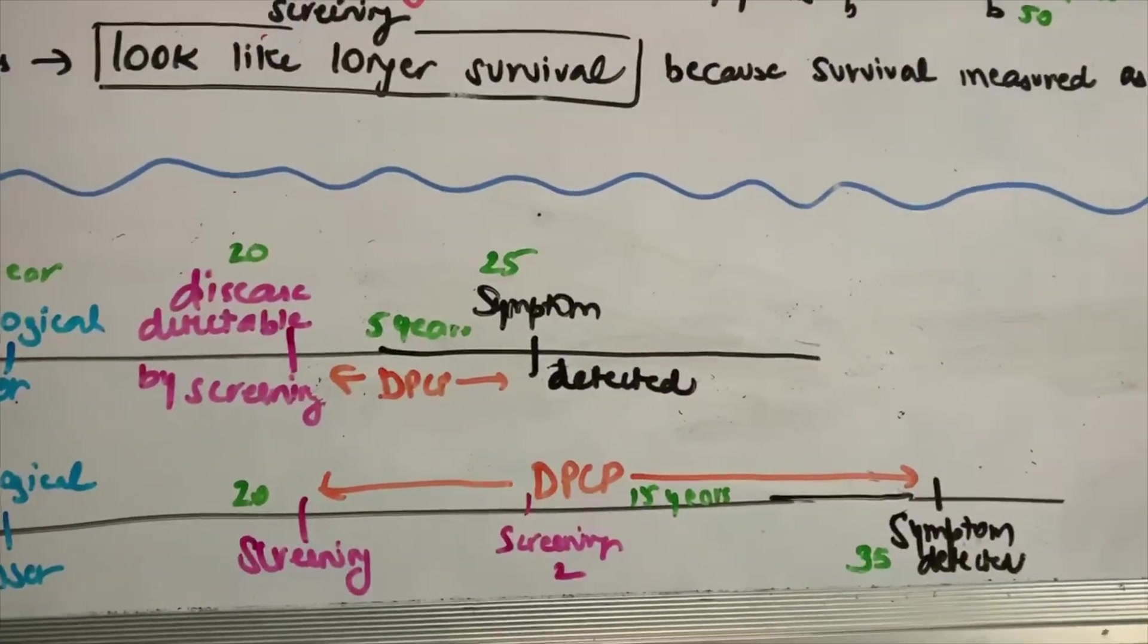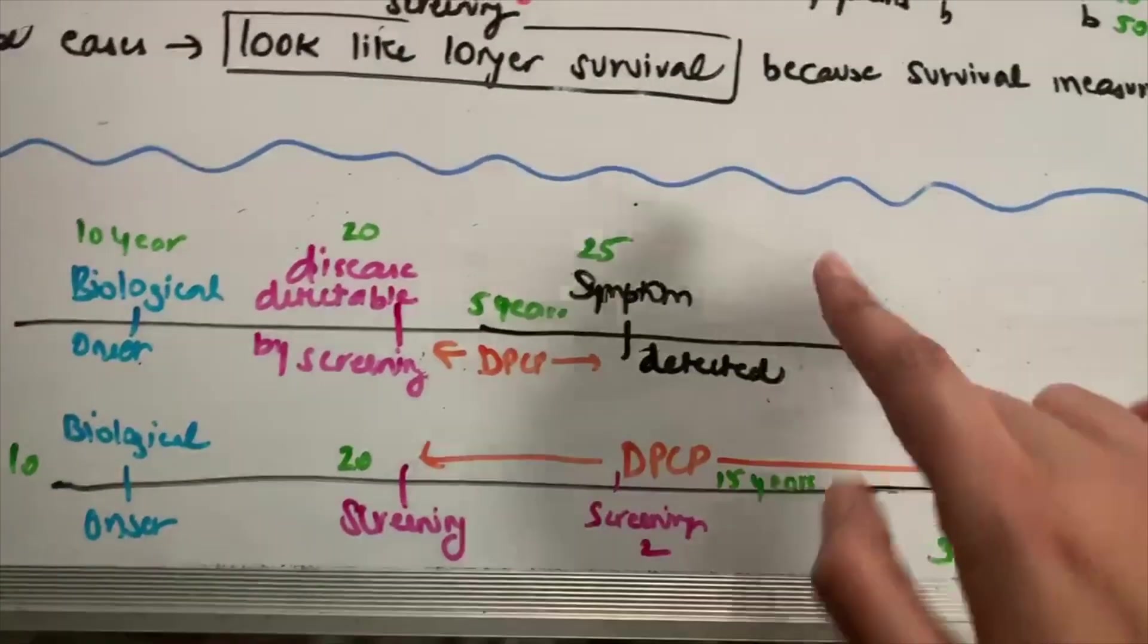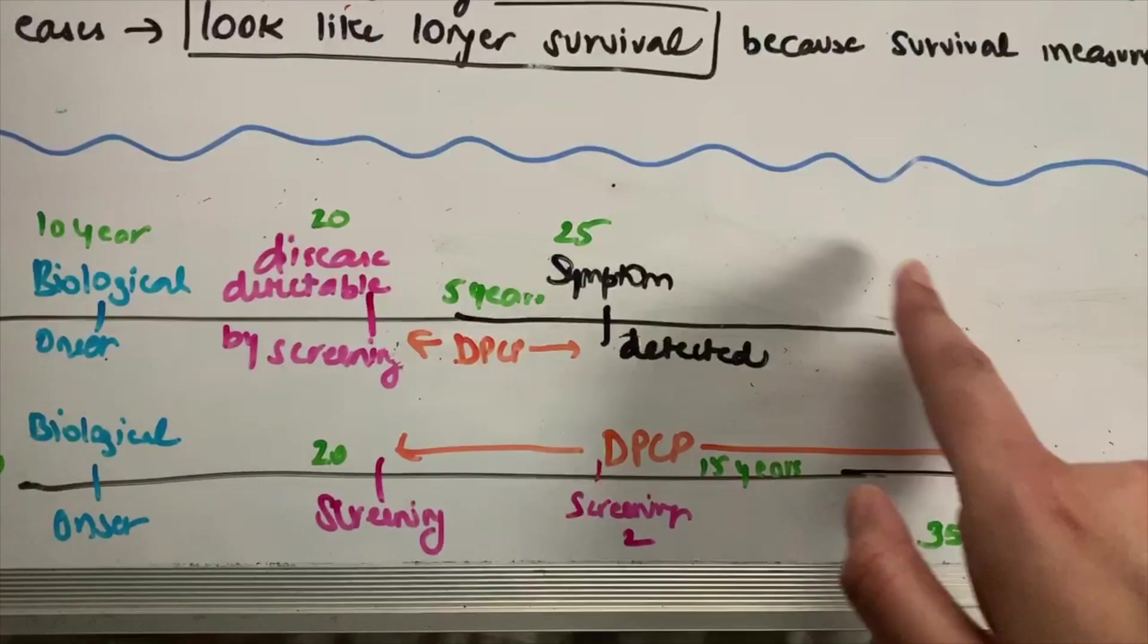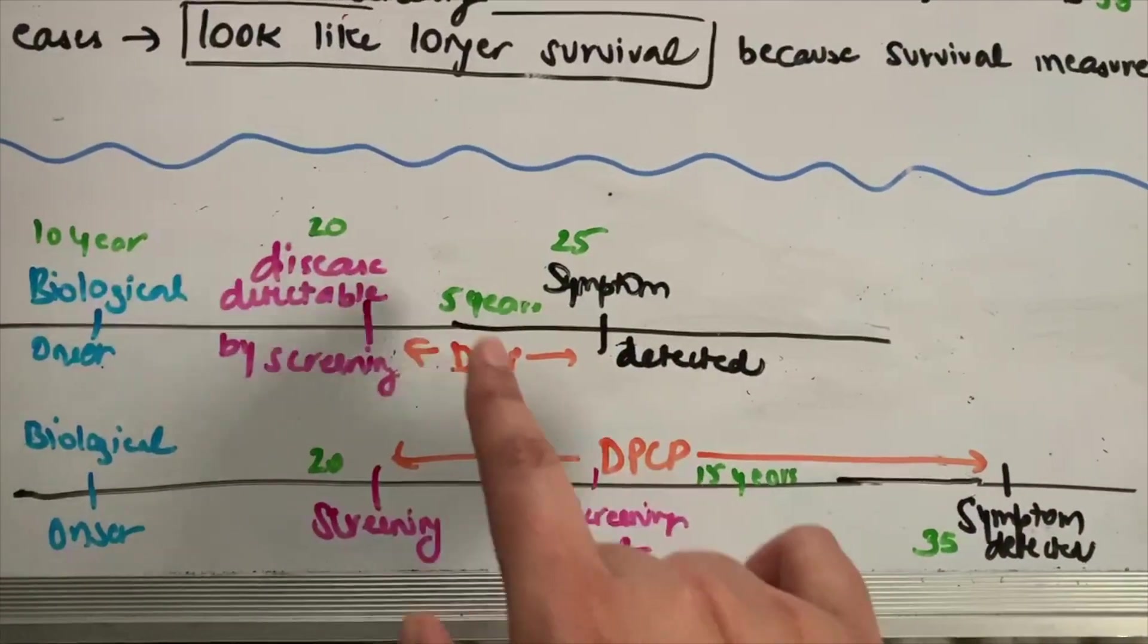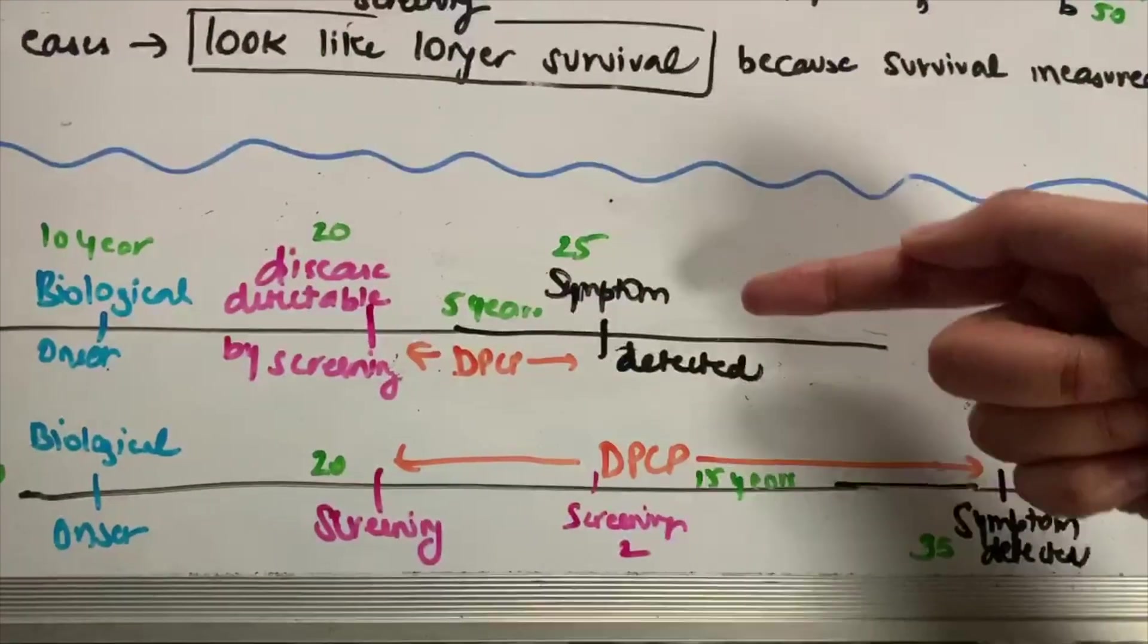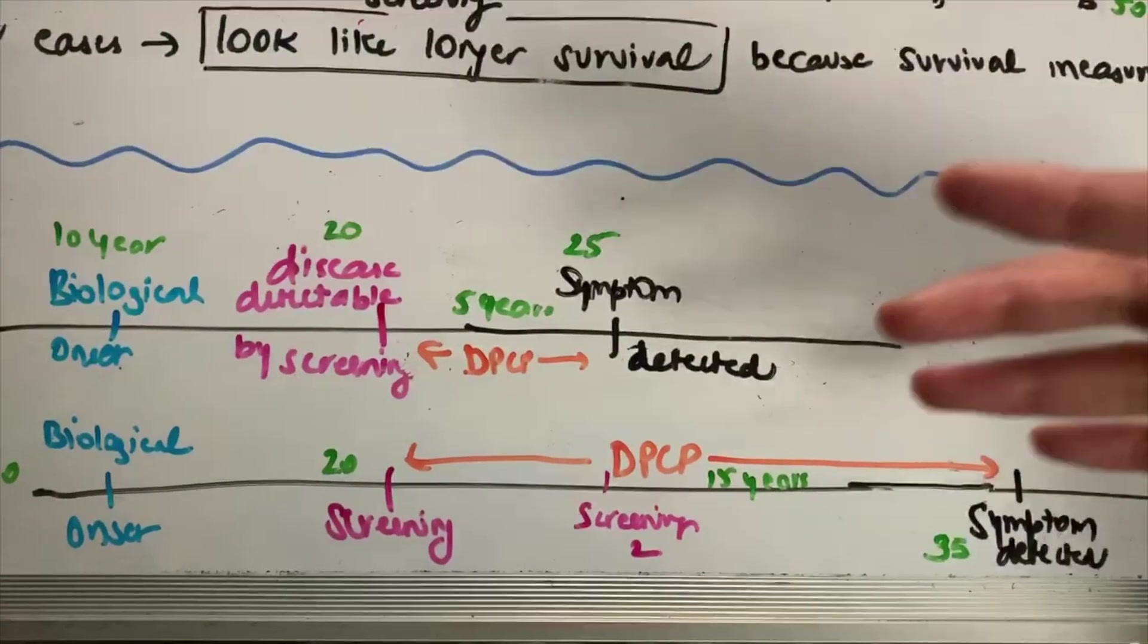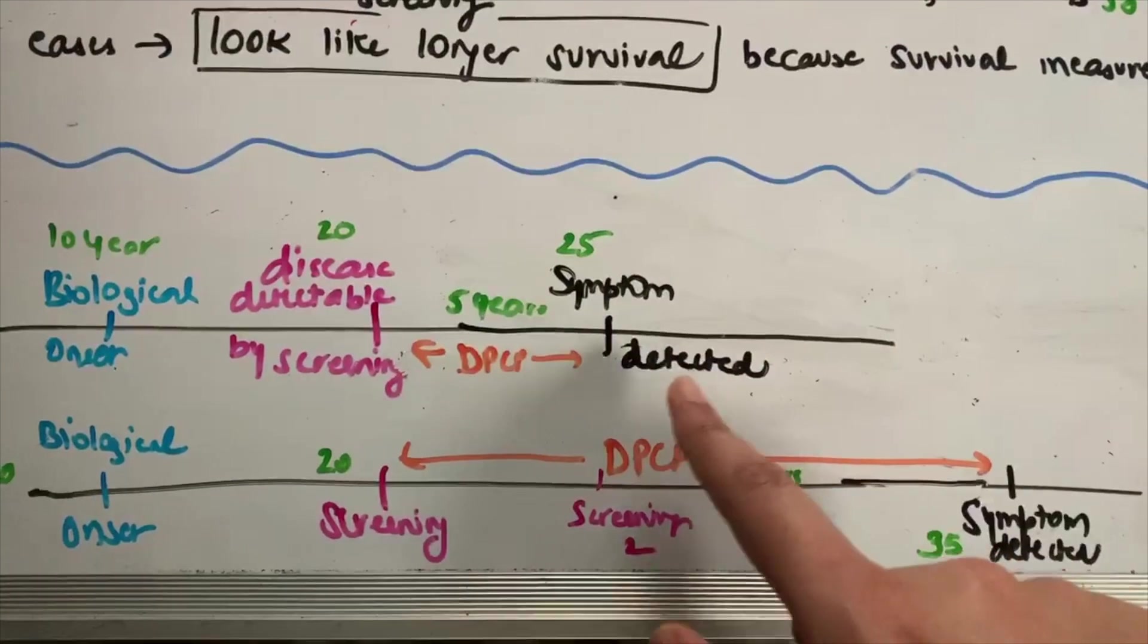So this person probably has a really good prognosis, as compared to this one who has a very aggressive form of lung cancer and his symptoms develop right after getting detectable by screening. So like, he has a DPCP of only five years. So this person is more likely to be diagnosed or identified as having lung cancer based off of his symptoms because they happen really quickly.